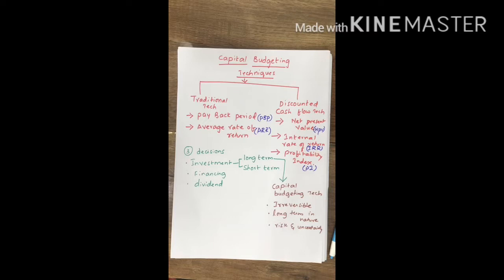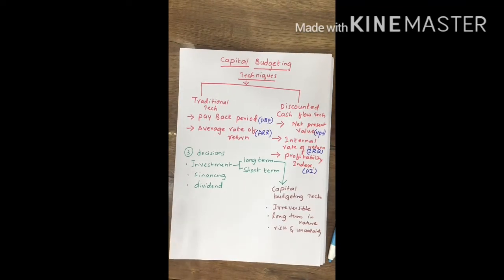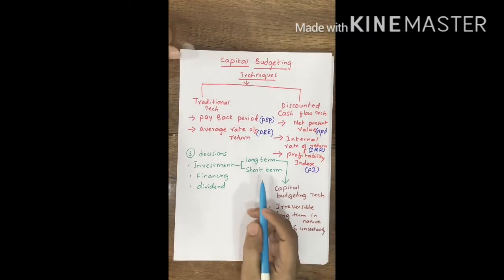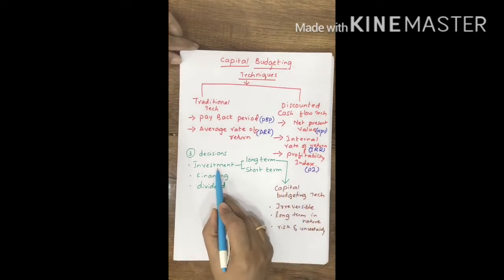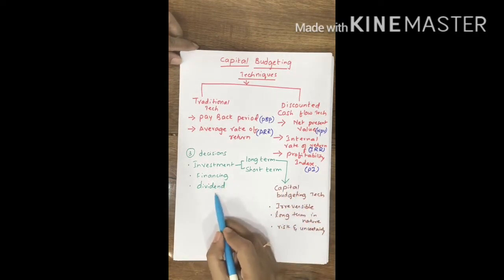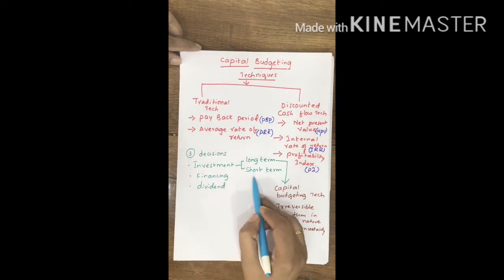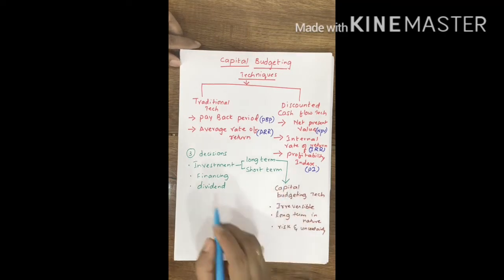Capital budgeting refers to the planning of available capital for the purpose of maximizing the long-term profitability of a firm and deploying this capital on investment proposals. These investment proposals are to be evaluated, and the financial manager of a company will take three important decisions: investment, financing, and dividend.